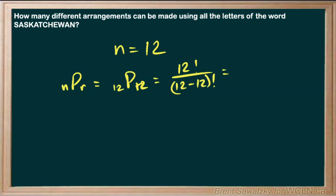We remember that 0 factorial, by definition, is just 1. So we're back to what we expected, proving we can use that formula here. We have 12 factorial number of arrangements in this set of letters.